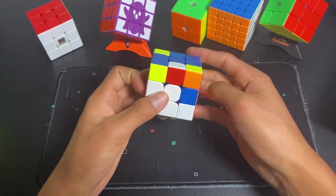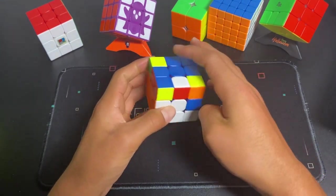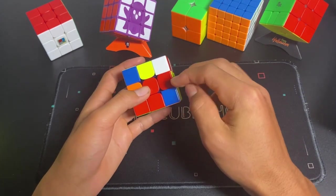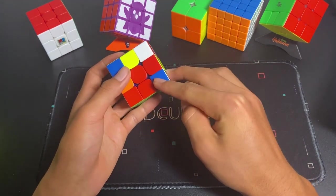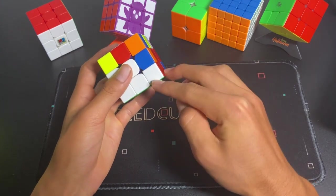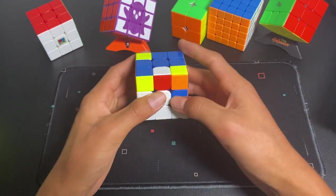Multi-slotting is where you solve two pairs at the same time if one edge is inserted without its corresponding corner and one corner is inserted without its corresponding edge. And you can